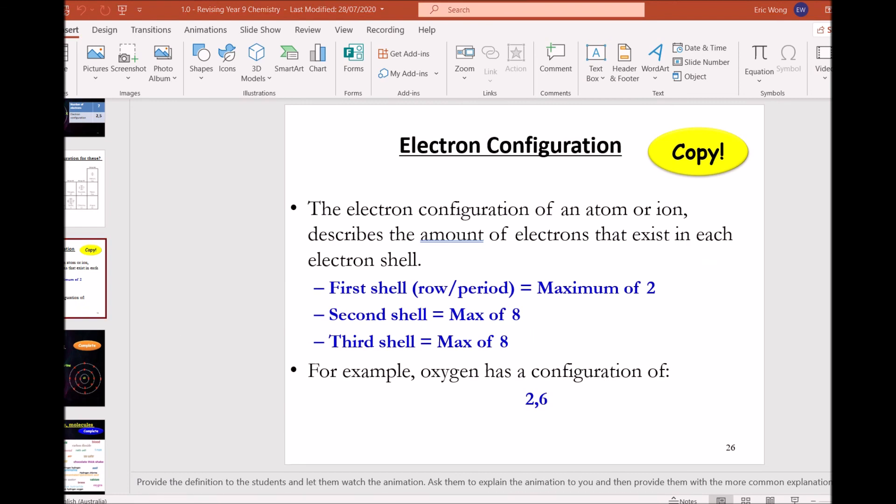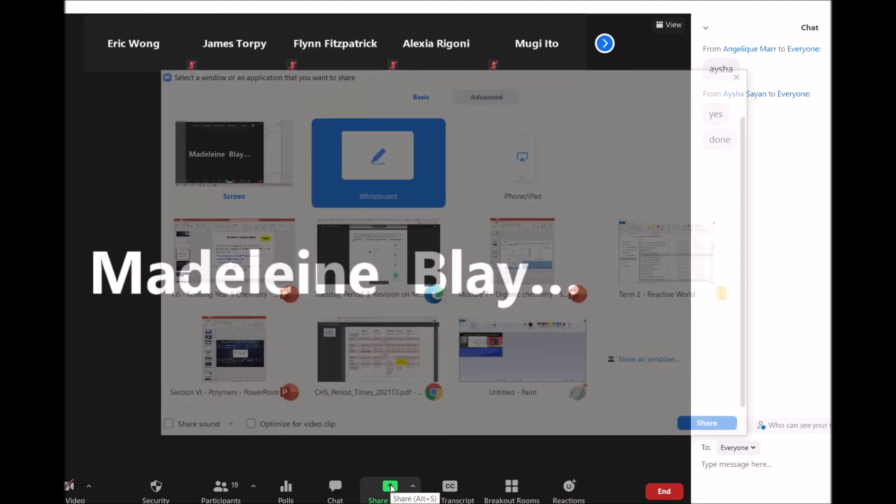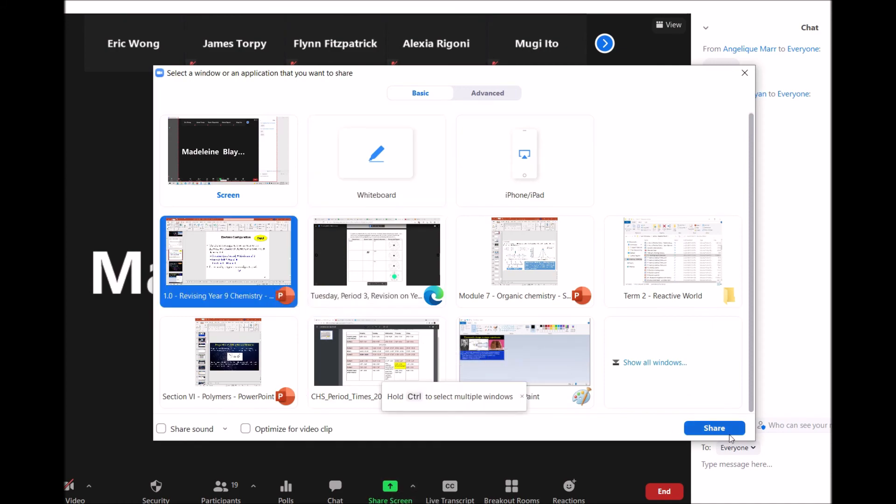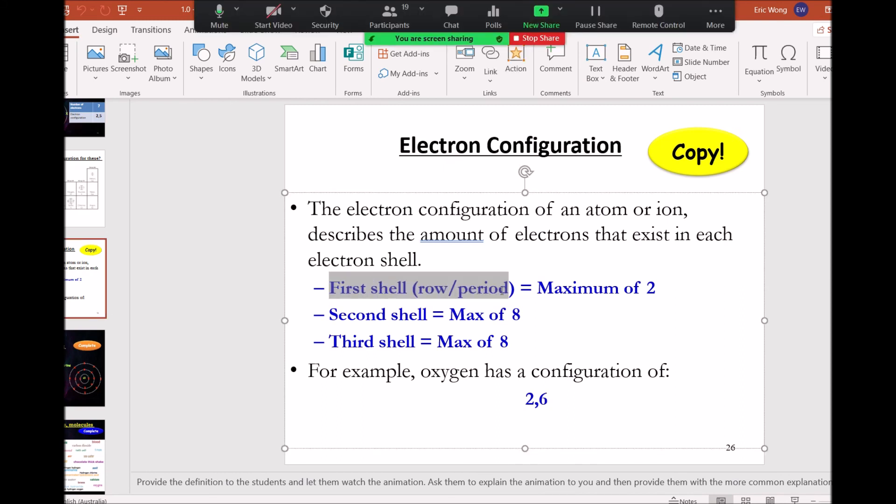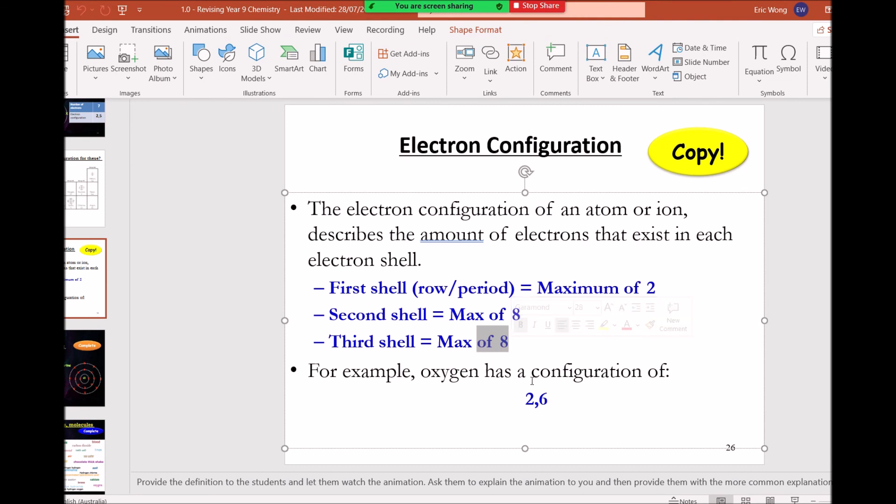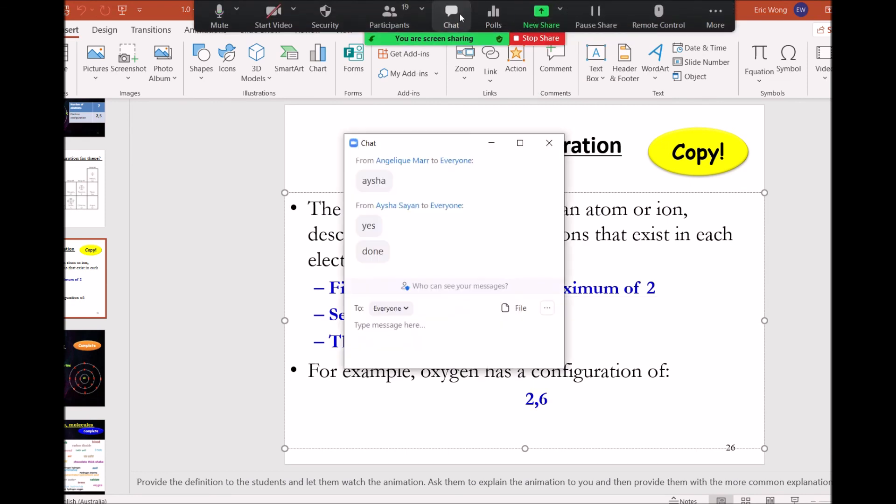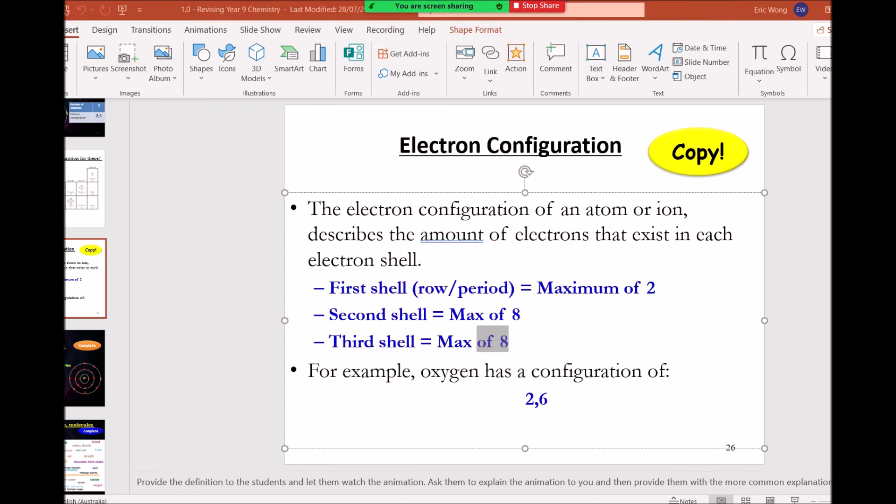One thing you do need to note is just a little pattern with the configuration. In electron configuration, if you've maxed out, the first shell only has a maximum of 2 electrons. The second shell, 8. Third shell, 8 as well. That's what we have there.